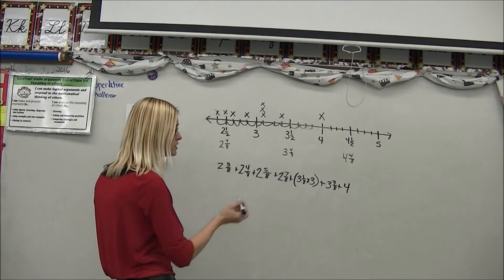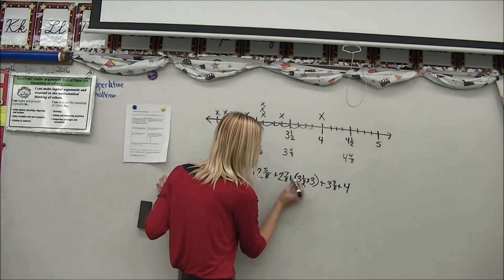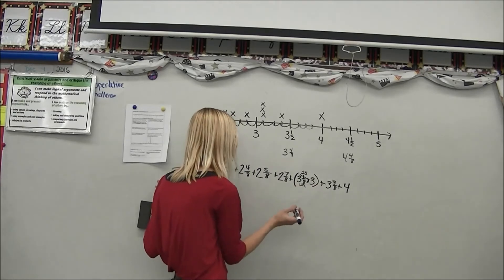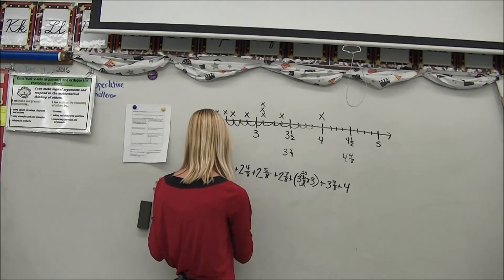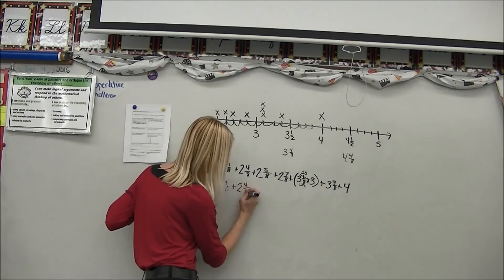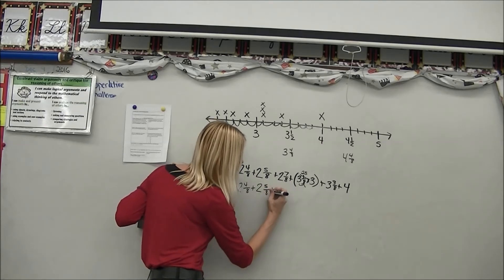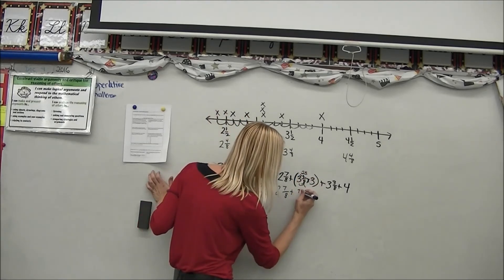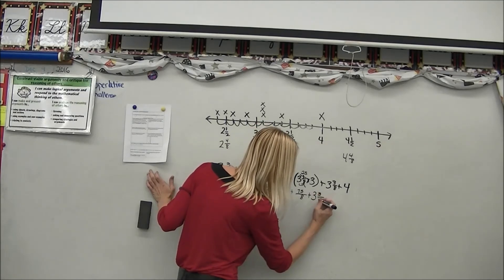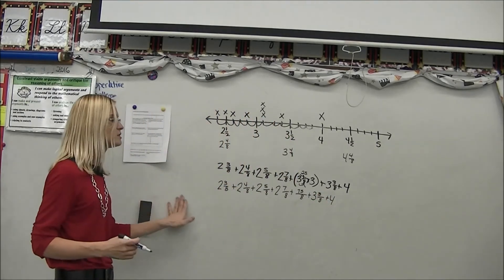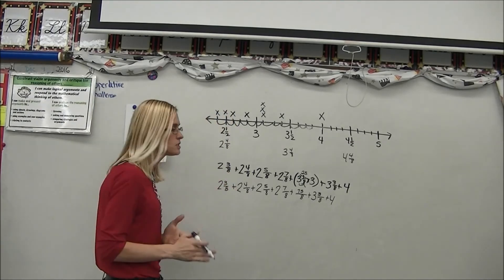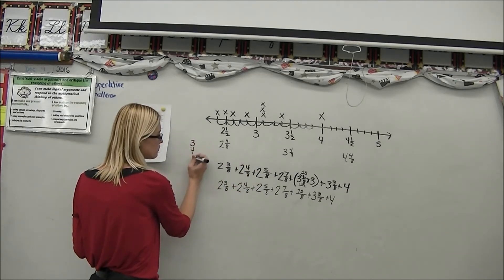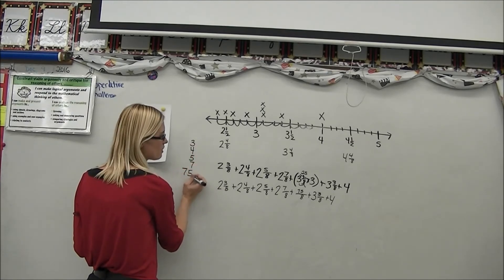And now I'm just going to go through. The very first thing I want to do is turn this into improper. And so 3 times 8 is 24 plus 1. My numerator is going to be 25. And 25 times 3 is going to be 75 eighths. So now I have 2 and 3 eighths plus 2 and 4 eighths plus 2 and 5 eighths plus 2 and 7 eighths plus 75 eighths plus 3 and 3 eighths plus 4 whole. So now I have this all written out and I need to add it up. First thing I'm going to do is look at my fractions and I'm going to add my numerators. When I add them, I actually like to add them going vertically. So I'm going to rewrite them.